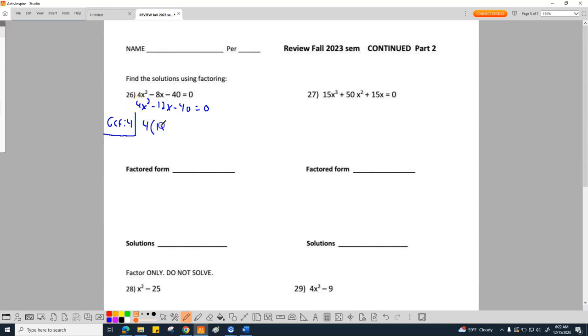So in this case, I've chosen 4. So 4 divided by 4, 1x squared. Negative 12 divided by 4 is negative 3x. Negative 40 divided by 4 is negative 10.